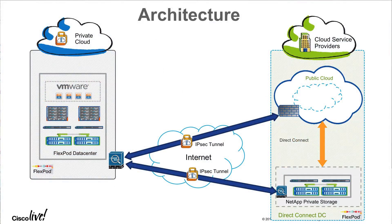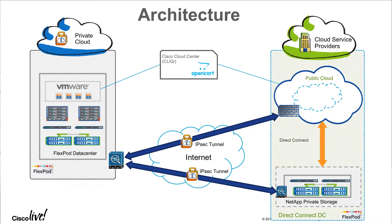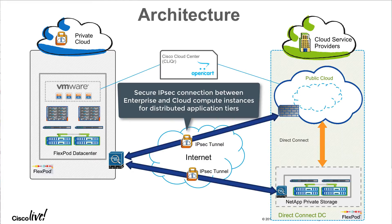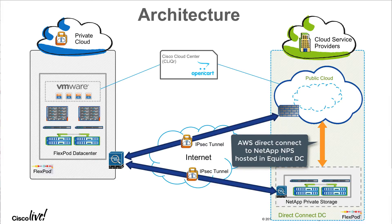The blueprint defined in Cisco Cloud Center enables application deployment at private or public clouds. An IPSec tunnel is established to securely connect the NetApp storage at the data center to the NetApp Private Storage hosted at Equinix. A second IPSec tunnel enables secure communication between virtual machines deployed in the FlexPod data center and Amazon Web Services. Virtual machines running in AWS access NetApp Private Storage over a low-latency 1GB direct link.